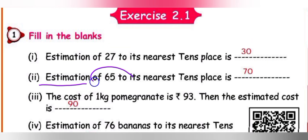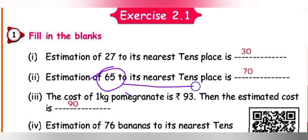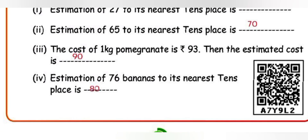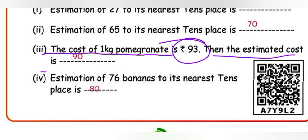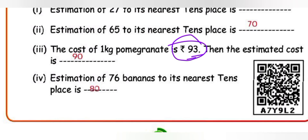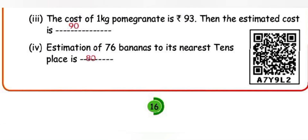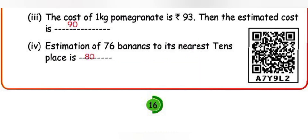Next: Estimation of 65 to its nearest tens place. Ones place is 5, which equals 5, so round up: 6 tens becomes 7 tens, that is 70. So 65 rounded to nearest tens place is 70. Next: Estimation of 76 to its nearest tens place. Ones place is 6, more than 5, so 7 tens becomes 8 tens, giving 80.